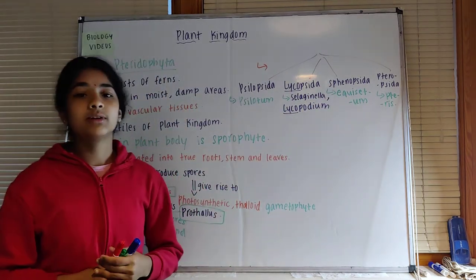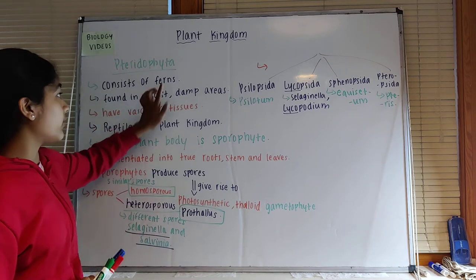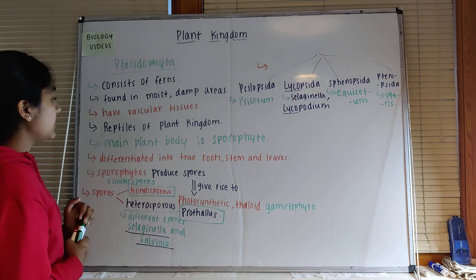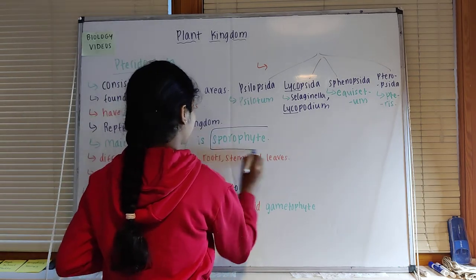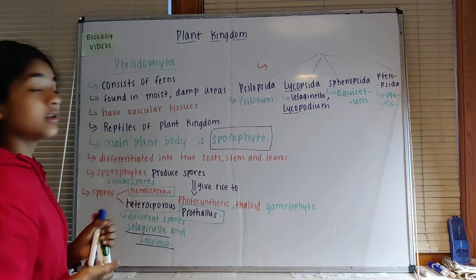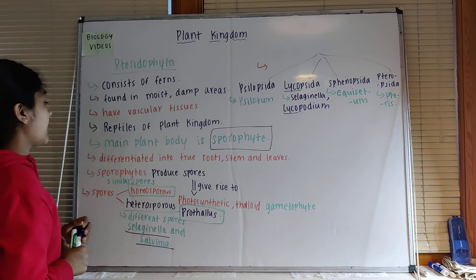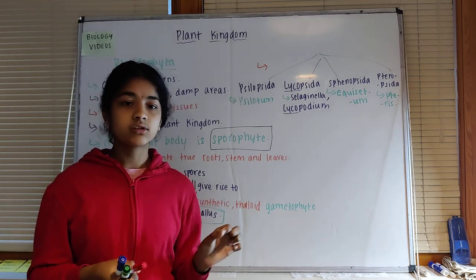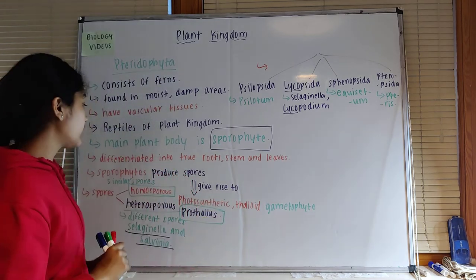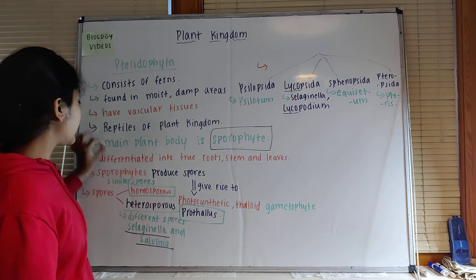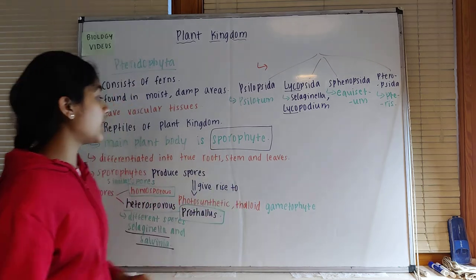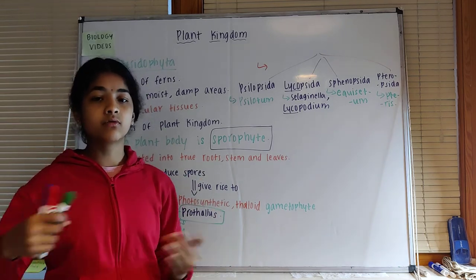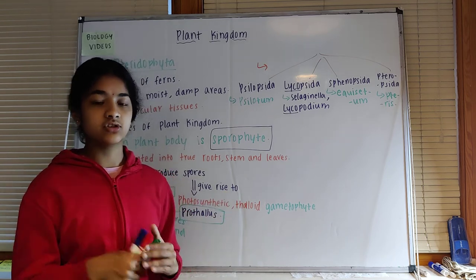To summarize, pteridophytes consist of ferns found in moist, damp, sandy areas. They have vascular tissues and are also known as reptiles of the plant kingdom. The main plant body is the sporophyte — this is very important. They are differentiated into true roots, stem, and leaves, unlike bryophytes where roots are not true but called rhizoids. Importantly, pteridophytes do not have flowers and fruits; those characteristics are possessed by gymnosperms and angiosperms.